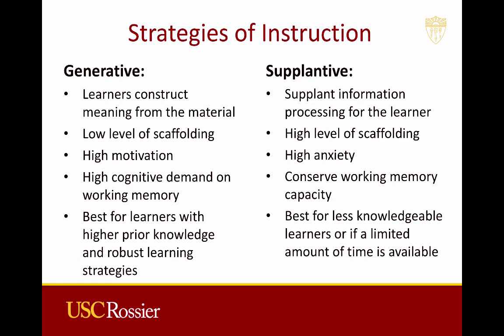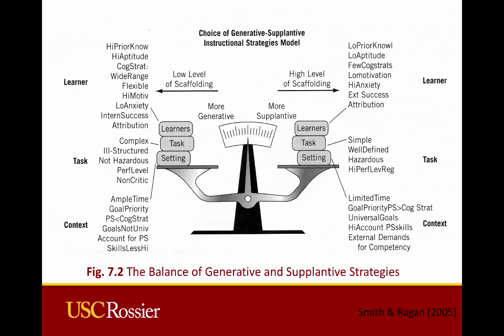Scaffolding is the cognitive processing support that the instruction provides the learners, allowing them to learn complex ideas that would be beyond their grasp if they depended solely on their own cognitive resources. The designer must create instruction that balances the mental effort needed to facilitate learning with the scaffolding provided to learners in order to avoid overloading working memory. This graphic provides details about the differences between generative and supplantive strategies. Designers need to consider information about the learner, task, and context gained from the analysis phase of the ADDI model — stressing the importance of conducting the analysis phase, which unfortunately is the phase most often skipped.